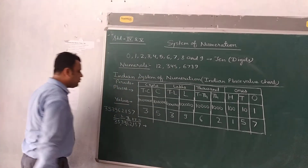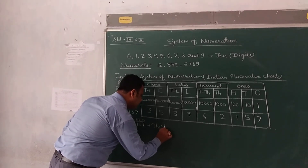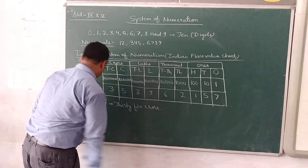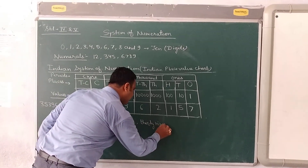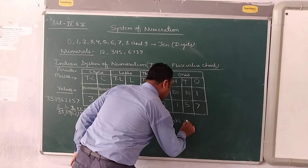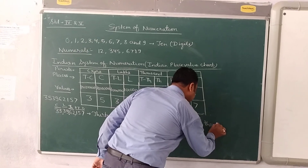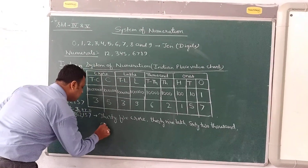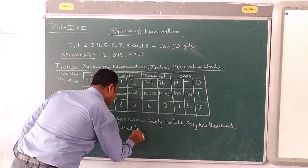Now we write the number in words. It is thirty-five crore, thirty-nine lakh, sixty-two thousand, one hundred fifty-seven.